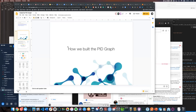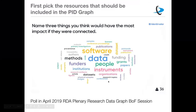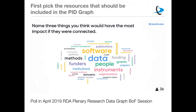I will now talk about our initial work — how we built the PID Graph. The first question is: what do you put in the PID Graph? What kind of resources? To get you started, I'll share a word cloud we generated at the last Research Data Alliance plenary in April — showing what kinds of things people would like to see connected in the PID Graph. An audience of about 35 people gave these answers: obviously research data, people, software was very high on the list, but also other things. The PID Graph can clearly go in all kinds of directions and become very complicated.